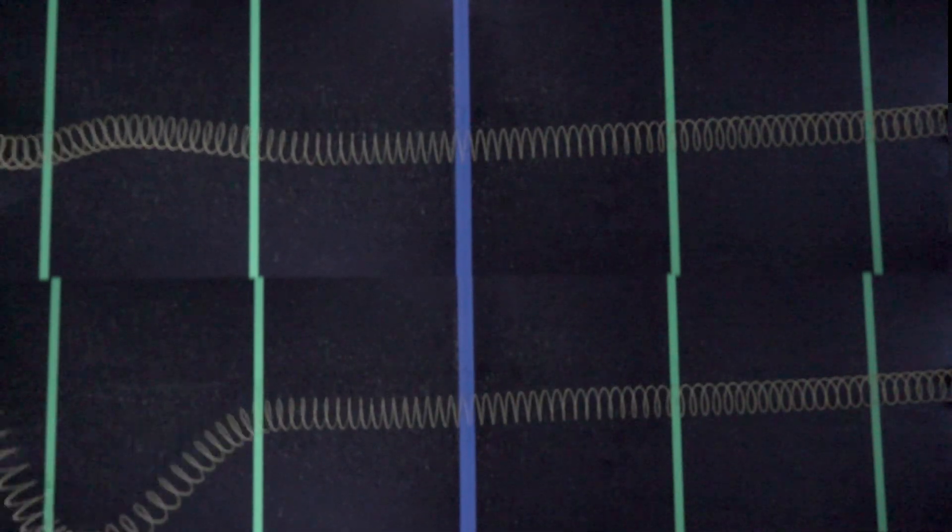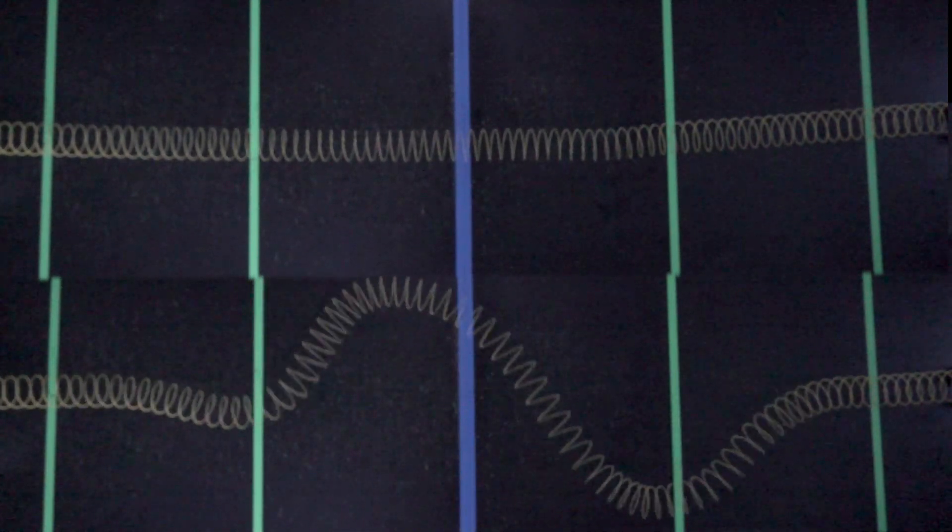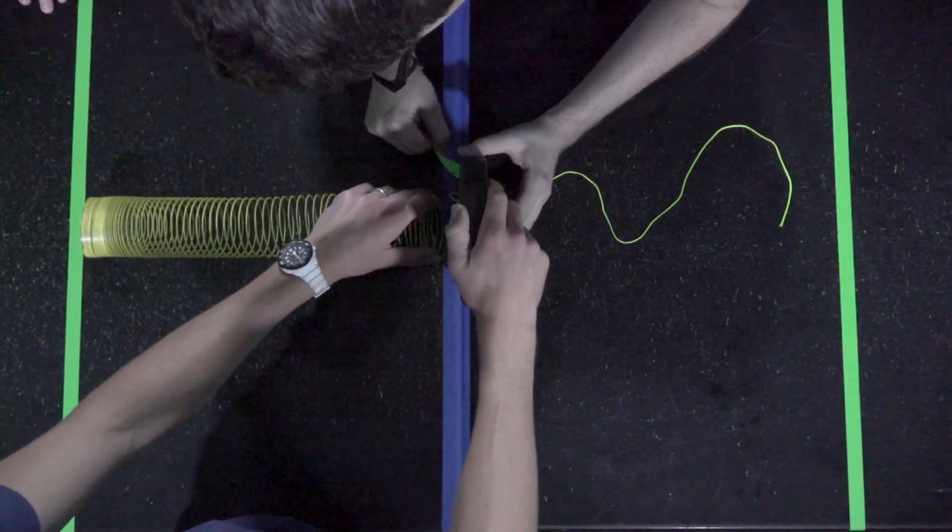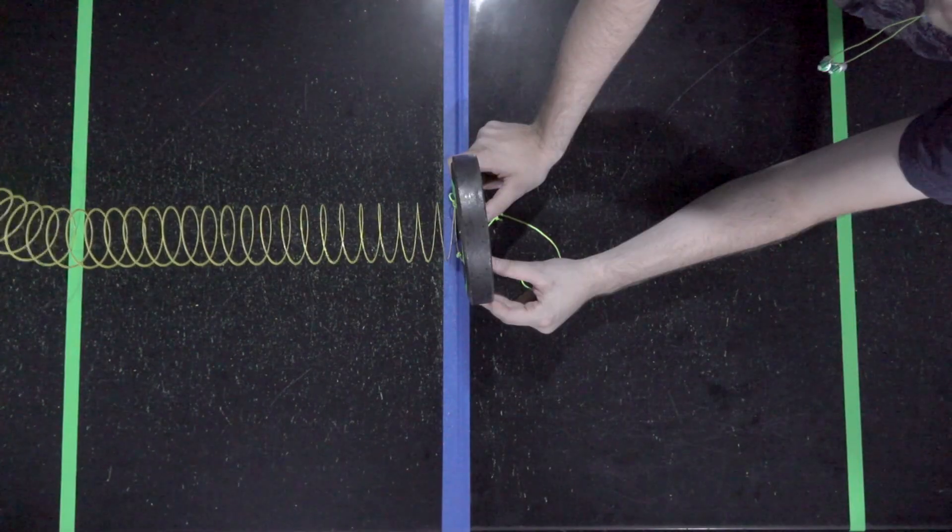The amount of energy transferred down the medium, however, is different. What happens when we send a pulse down the spring and it reflects off of a rigid boundary?